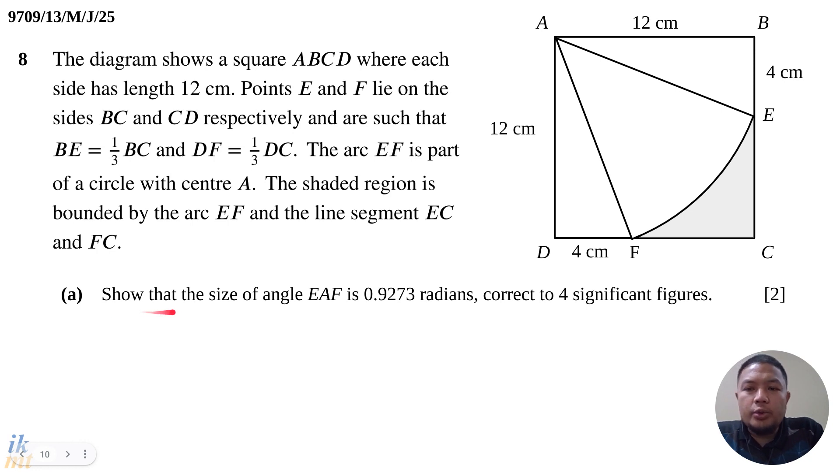Question part A: show that the size of angle EAF is 0.9273 radians, correct to four significant figures. Whenever you see a question like this, you immediately know that this is going to be a calculated question because they expect you to get a long decimal. So let's find angle EAF.